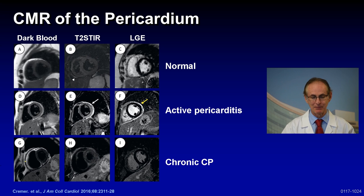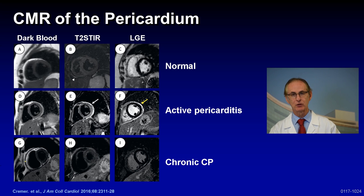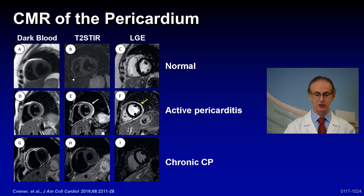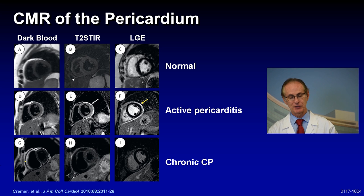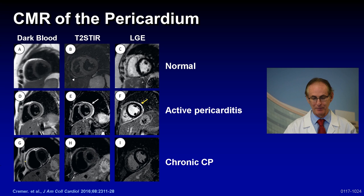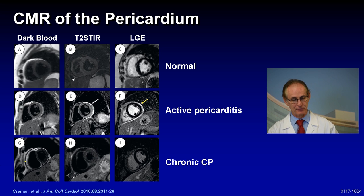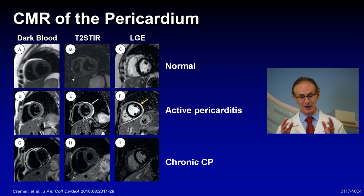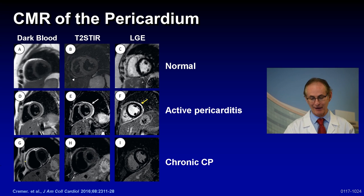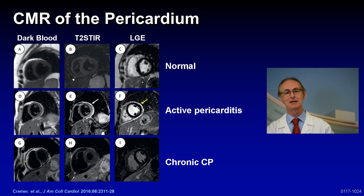Here's an example of the powerful role of CMR of the pericardium. We have three different cases: normal, active pericarditis, and chronic constrictive pericarditis. The imaging panels are dark blood — which measures thickness — T2-STIR — which measures swelling or edema — and LGE, which measures inflammation. The normal panel shows everything essentially negative: no increased thickness, no edema, and no inflammation. The middle panel shows active pericarditis: panel D shows no increased thickness, but panel E shows white around the heart — that's swelling, indicating recent inflammation — and panel F shows a white line around the heart representing inflammation. So this is very severe, active pericarditis with edema and inflammation.